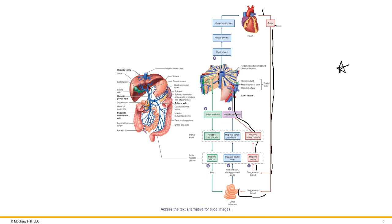From the small intestine, once all nutrients are absorbed, the blood is deoxygenated but carries absorbed nutrients. This blood enters the liver through the hepatic portal vein, which splits into several branches going into the liver lobules and flows through the hepatic sinusoids over the hepatocytes, which detoxify as needed. Deoxygenated blood then exits through the central vein, hepatic veins, the inferior vena cava, and returns to the heart, then goes to the lungs for gas exchange.